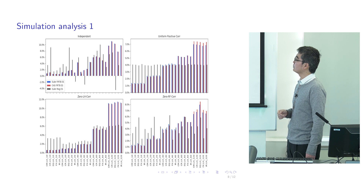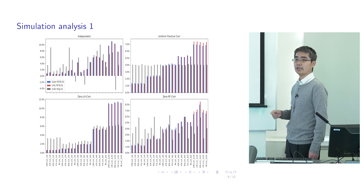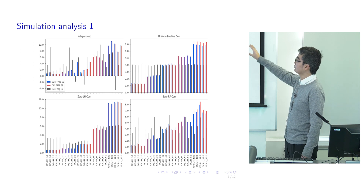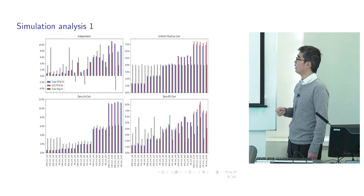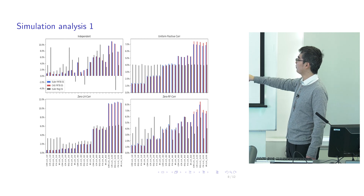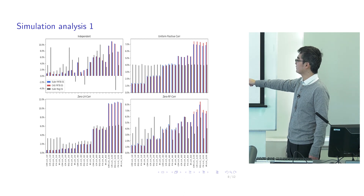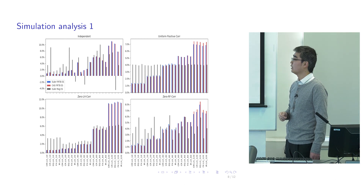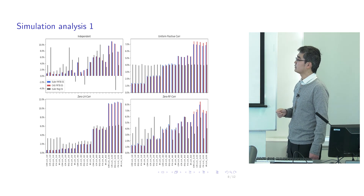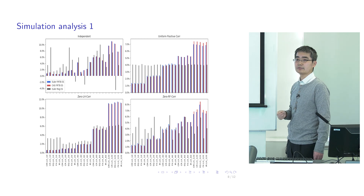We will illustrate these three points using the following three simulation analyses. In the first analysis, we look at the impact of the liquidity horizon adjustment on the allocation. These are four scenarios where different correlation structures exist among different buckets. The horizontal axis for all four graphs is liquidity horizon — the right-hand side has longer liquidity horizon and the left-hand side has shorter liquidity horizon.